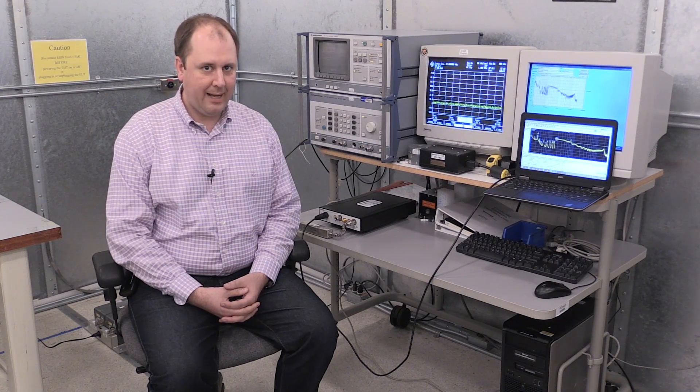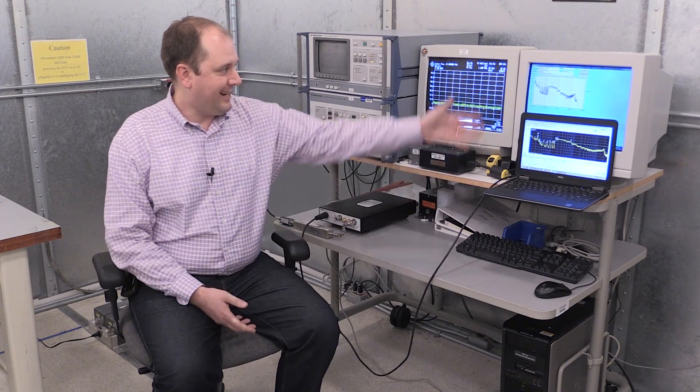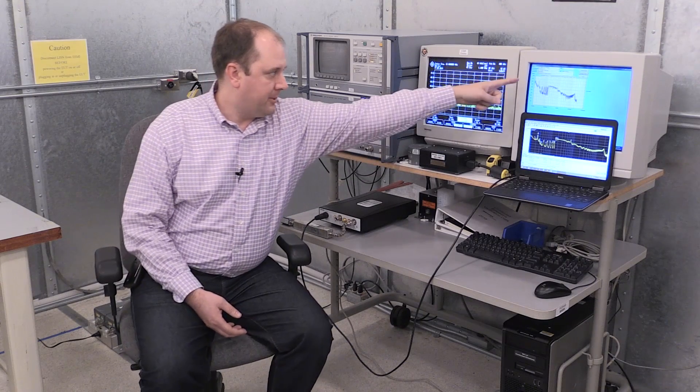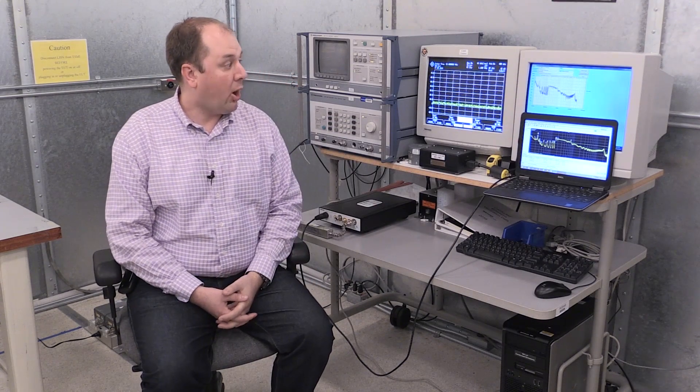So now we're going to compare the results that we had from the full compliance receiver with the RSA 607A real-time spectrum analyzer which is USB controlled. We can see the results from the compliance receiver versus the results for the RSA.